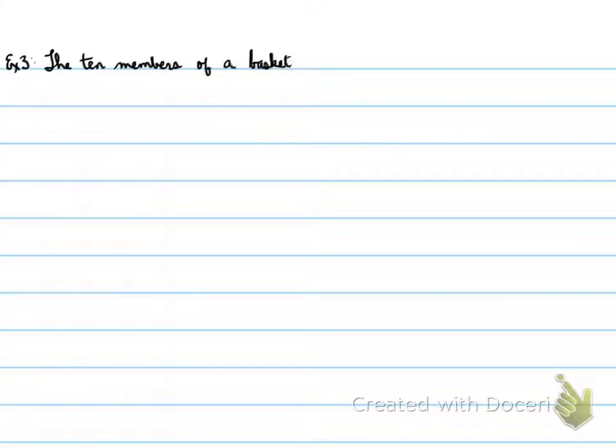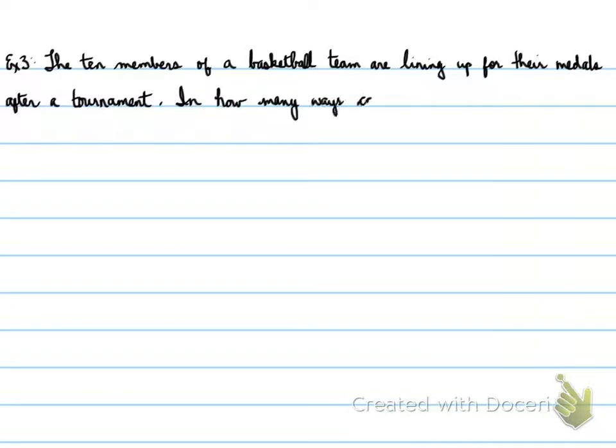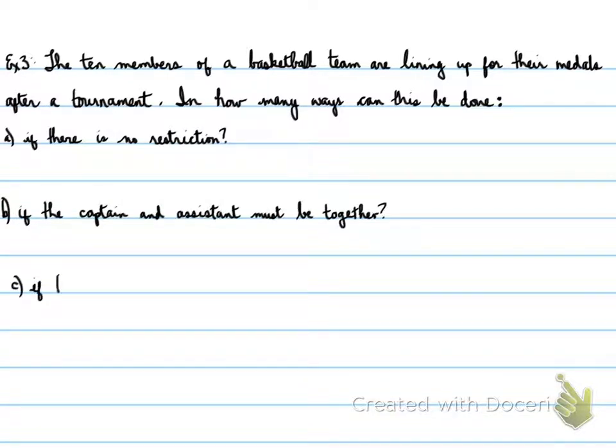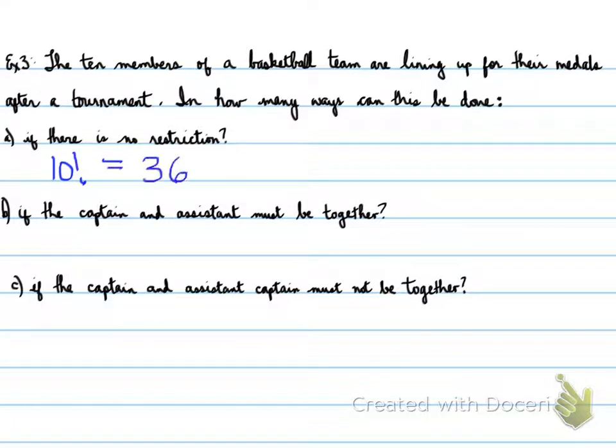Example 3. The 10 members of a basketball team are lining up for their medals after a tournament. In how many ways can this be done? We have three cases. If there's no restrictions, we're looking at 10 factorial ways of putting people in a line to get their medals. Because of that, we have 3,628,800 possible ways.